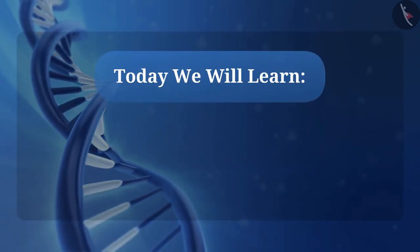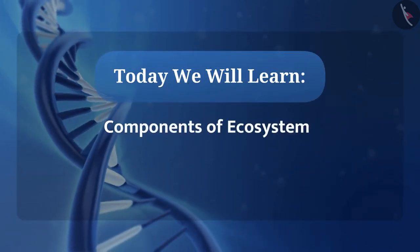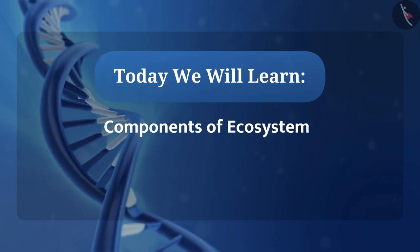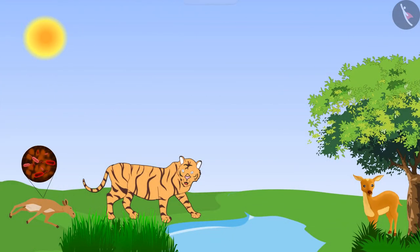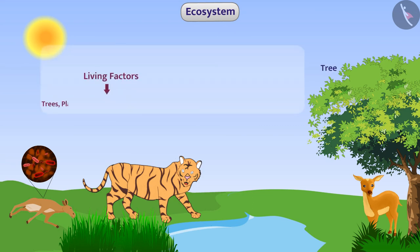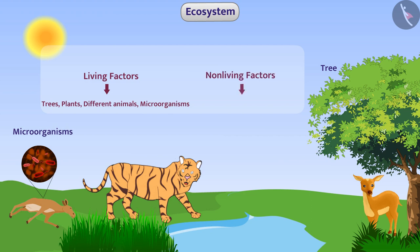Today we are going to learn about components of an ecosystem. Let us first understand what is an ecosystem. There are different organisms around us like trees, plants, different animals, and microorganisms, as well as non-living factors such as soil, wind, rain, heat, and minerals. This creates our environment.